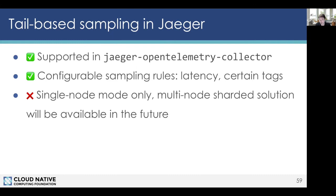In terms of Jaeger support, Jaeger is moving toward building backend components on top of OpenTelemetry Collector, which already has logic for tail-based sampling — configurable based on latency or tags like error flags. Unfortunately, it currently only works in single-node mode. If traffic requires multiple collectors, they're normally stateless — but for tail-based sampling they become stateful and need a sharding solution, which is not yet available but will be in the future. There are already prototypes in OpenTelemetry. That covers sampling.